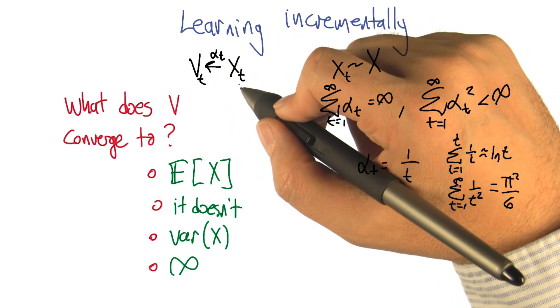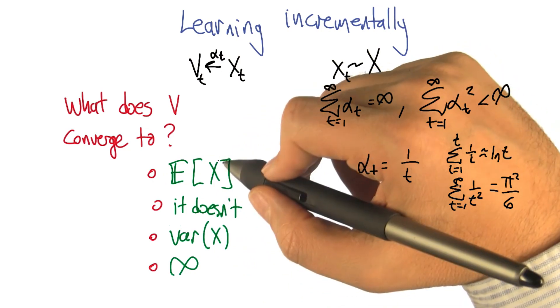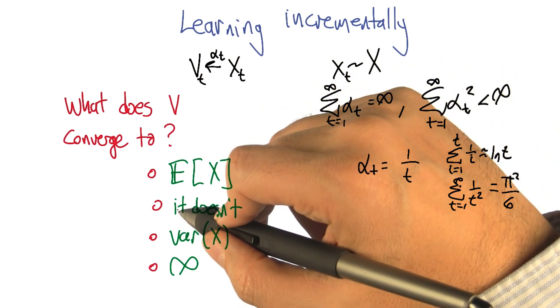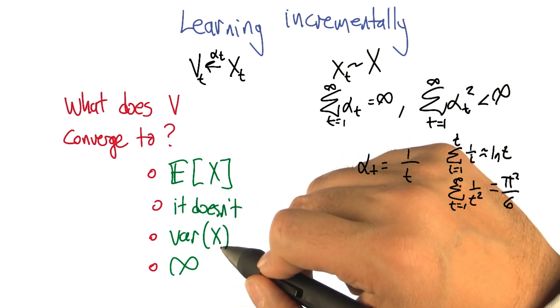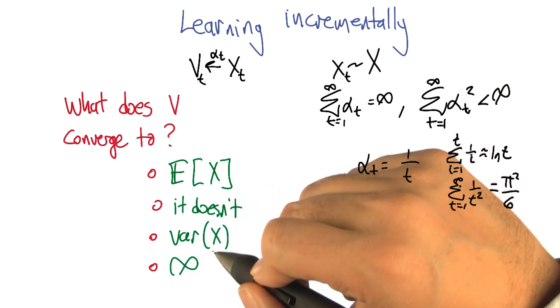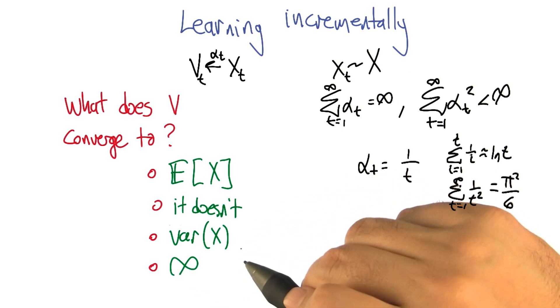And what I'm asking is, what do you think this converges to? Do you think it converges to the expected value of x? Do you think maybe it just doesn't converge at all? Do you think it converges to the variance of x, the of the random variable x? Or does it converge to infinity? It just keeps growing without bound.